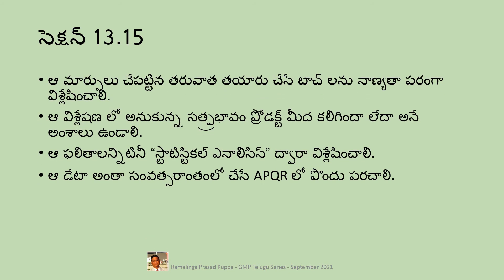Section 13.15 prescribes that batches produced after implementing the change should be evaluated for expected improvement. All evaluation should be done statistically. For statistical analysis, you need data from at least three batches. Data from more than three batches is also good if available. More the data, better the evaluation. All the data should be part of the annual product quality review document, which is called APQR.